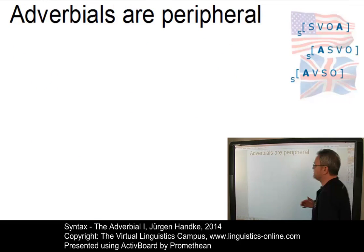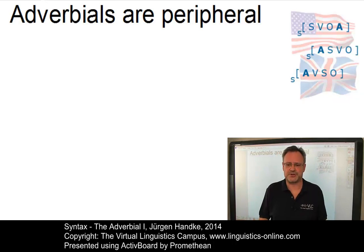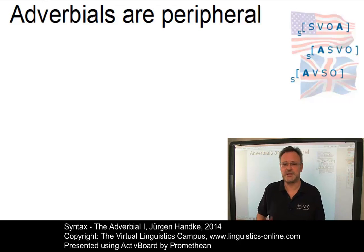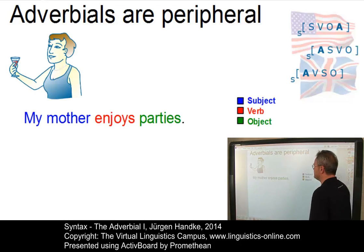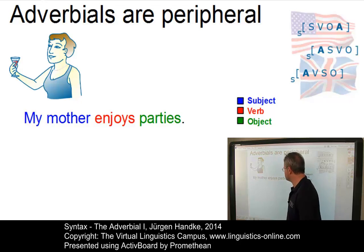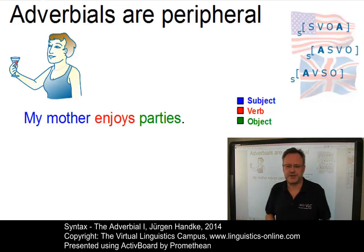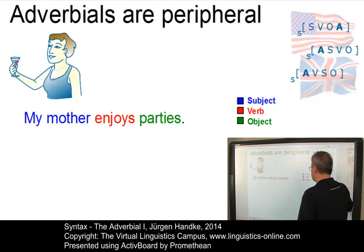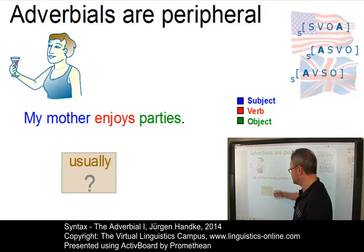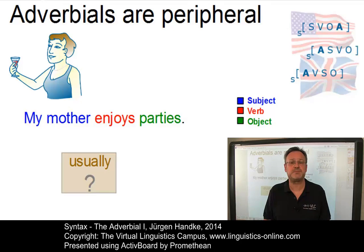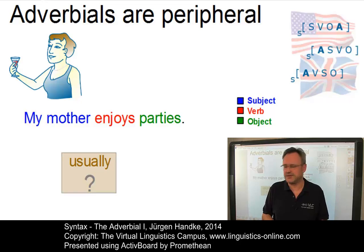Adverbials are the most peripheral among the elements of clause structure. They can usually be omitted and are most mobile. Let's illustrate that. Here is a very simple sentence: my mother enjoys parties, where my mother is the subject, enjoys the verb, and parties the object. Now, let's insert the adverbial 'usually', which is of course an adverb and thus the head of a simple adverb phrase without any modifier. We have three options to insert this adverbial into the sentence.